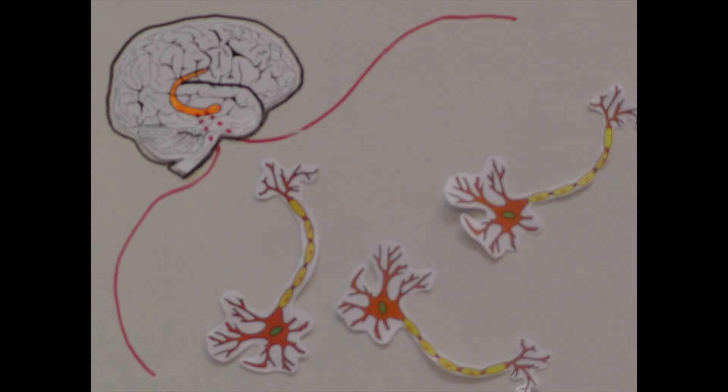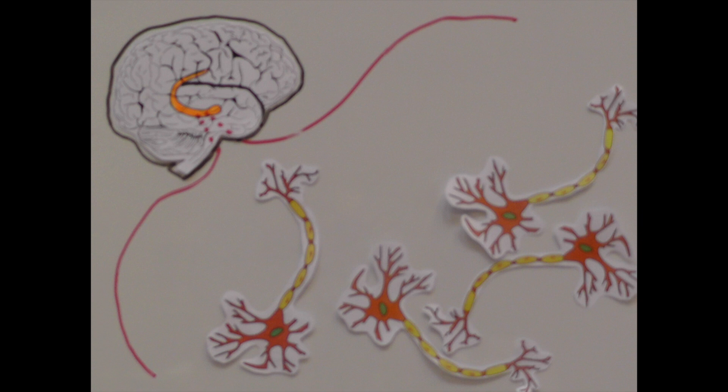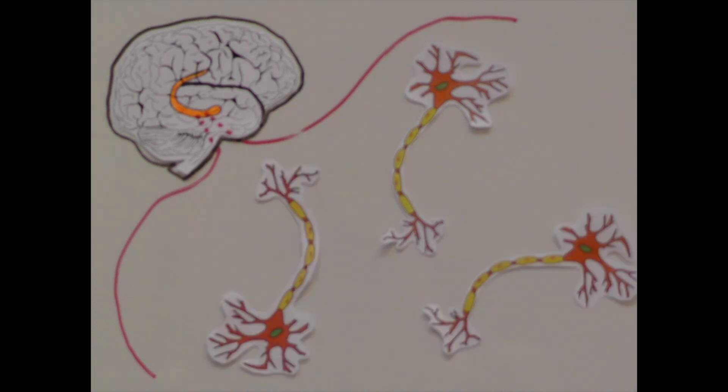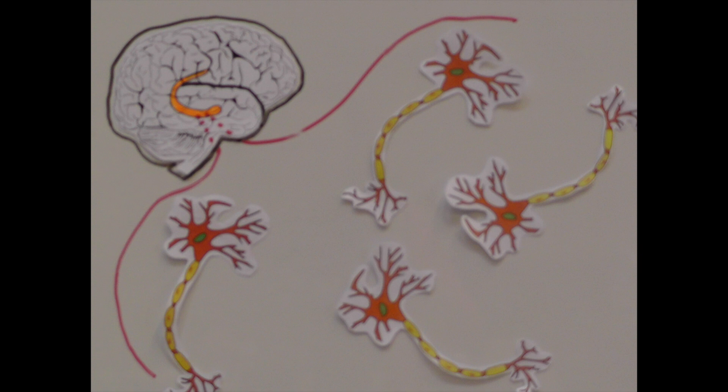For many years it was thought that the brain cells you were born with were the only ones you'd ever have but this has been found to be untrue. A process called neurogenesis describes the production of new neurons in specialized areas of the brain. The hippocampus is one of them.